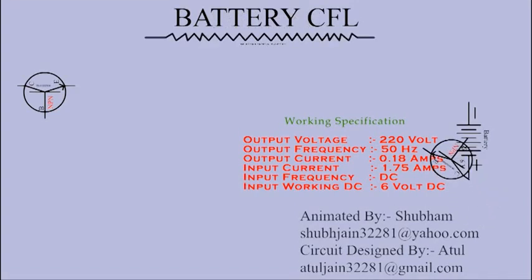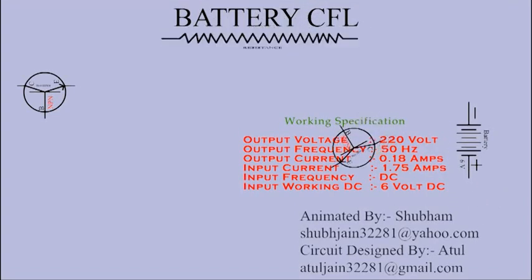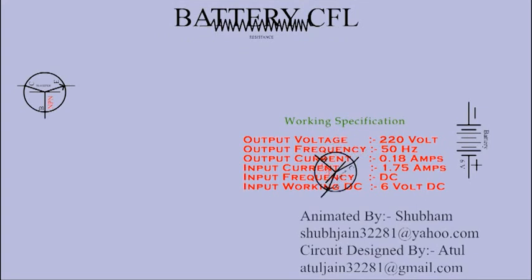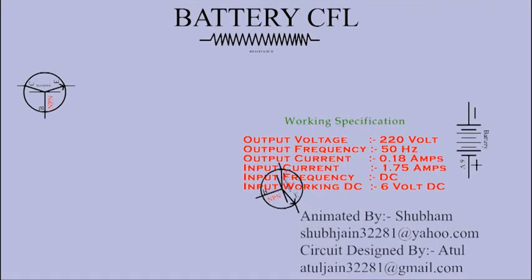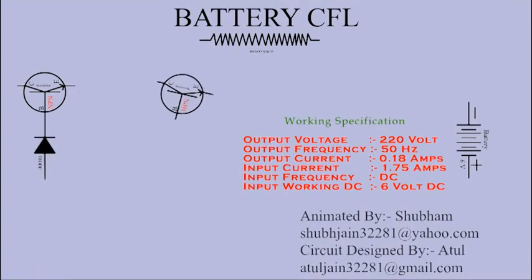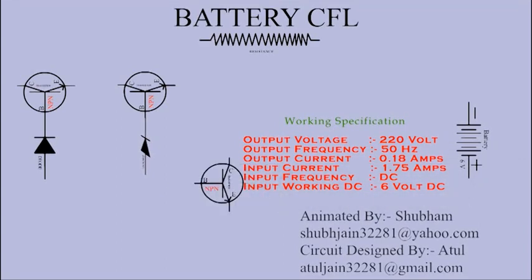Where less current is required, resistance is used. Where direct current is required, the diode is used. When we have to convert alternating current to direct current — that is, any frequency which is alternating current is to be converted to direct current — a half cycle is to be made, and there we use a diode. Till now you have seen two diodes.